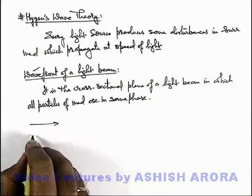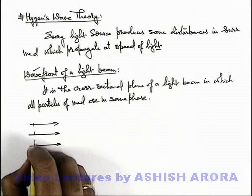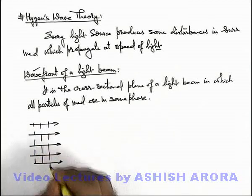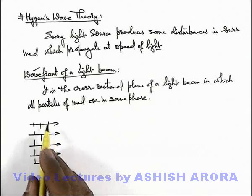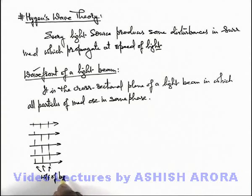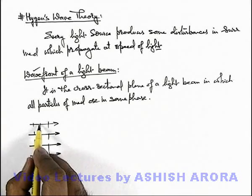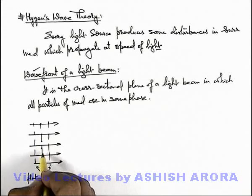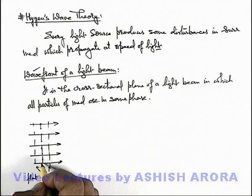For example, if there is a plane light beam propagating in a specific direction, the cross-sectional plane of such a light beam would be flat. The plane which is perpendicular to the light beam is termed as the wave front of the light beam. These are flat wave fronts, and all medium particles within a wave front are assumed to be oscillating in the same phase.